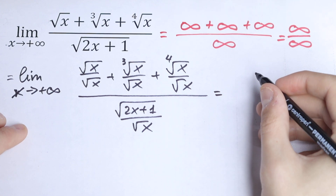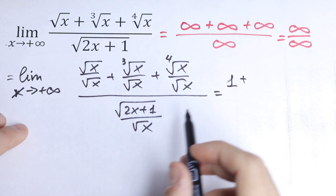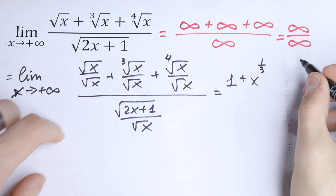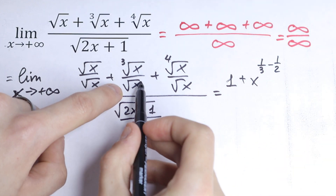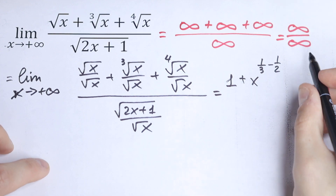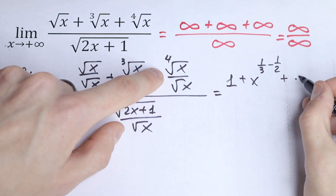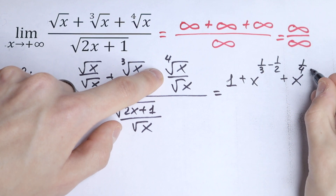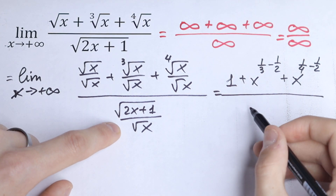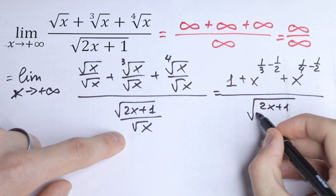Let's simplify this. The first term cancels to one. The second term we can write as x to the power one-third minus one-half, bringing the square root to the denominator with a minus sign. Plus x to the power one-fourth minus one-half. And in the denominator we can write square root of (2x plus 1) over x under one square root.